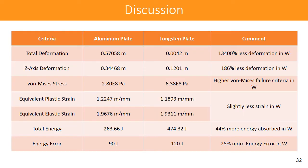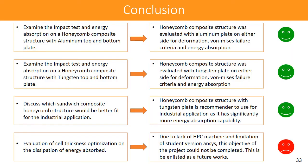In the comparative study between the aluminum and tungsten plate cases: total deformation is significantly less with tungsten, and in the Z-axis deformation, there is 186% less deformation with tungsten. The von Mises failure criteria is higher with tungsten. In terms of equivalent plastic and elastic strain, tungsten shows slightly less strain, indicating better performance. Tungsten absorbs 44% more total energy, with 25% more energy error, outperforming aluminum in every category.